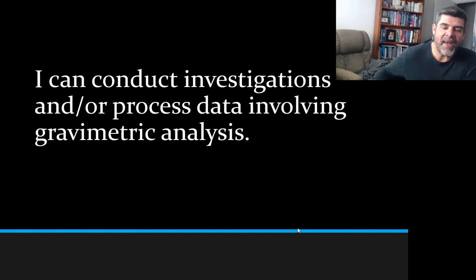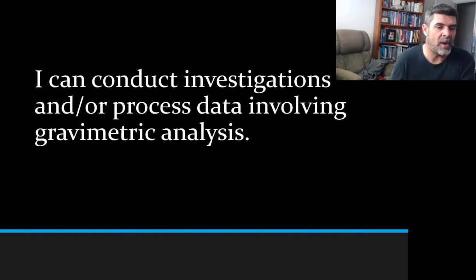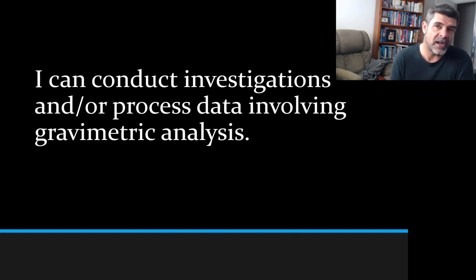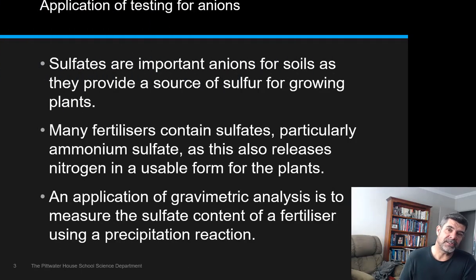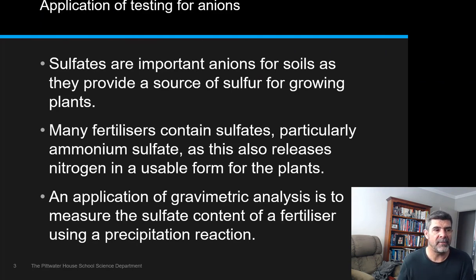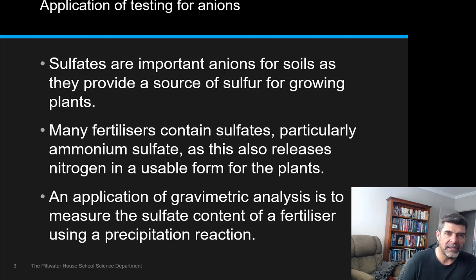We've come back to gravimetric analysis over and over again, and in fact we have. This is a way of turning some of our qualitative analyses — previously used to identify different ions in solution — to actually identifying how much of those ions are present. Once we get an analytical technique with a quantitative component, we need a different type of test, and that's what gravimetric analysis gives us.